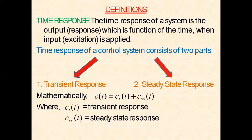Mathematically, the time response c(t) is the summation of the transient response c_t(t) plus the steady state response c_ss(t). So the time response of a control system consists of two responses: the transient response and the steady state response.